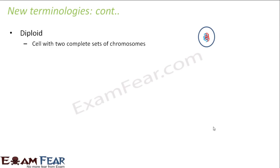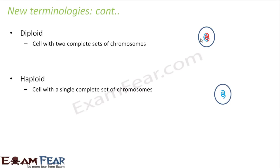Let us now talk about diploid and haploid cells. A diploid cell is a cell with two complete sets of chromosomes — in diploid cells the chromosomes always exist in pairs. One set is given by the father and the other set is given by the mother.